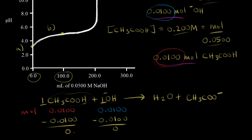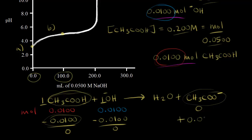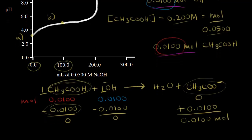This is the equivalence point for this titration. We're converting acetic acid into acetate, CH₃COO⁻. Starting with 0 moles of acetate and losing 0.01 moles of acetic acid, that turns into 0.01 moles of acetate anion. If we find the total volume of our solution, we can find the concentration of acetate anions.